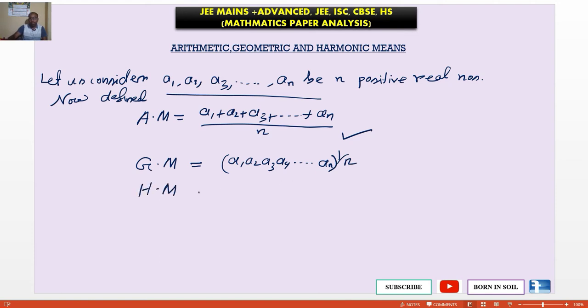In short form harmonic mean HM which is equal to n by reciprocal of positive numbers a1, a2, an, that is 1 by a1 plus 1 by a2 dot dot dot up to 1 by an, which is called harmonic mean of this number a1, a2, a3 up to n.